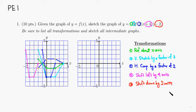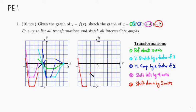Last step: shift down two units. This point goes down two units, this one goes down two, this one goes down two, and this one goes down two. Connect them all together. So let's sketch the final picture on the right grid — connecting them all, you get something like that. That's the graph of this given function after all the transformations.